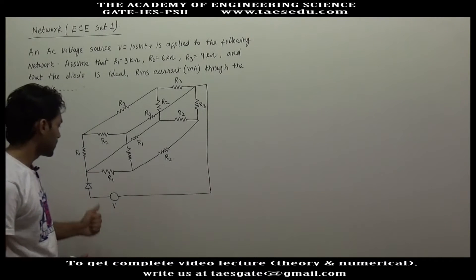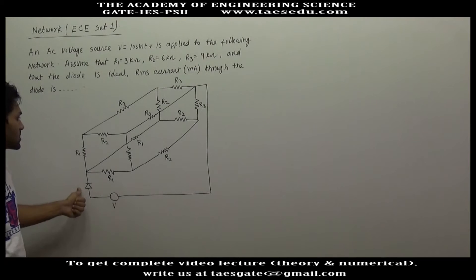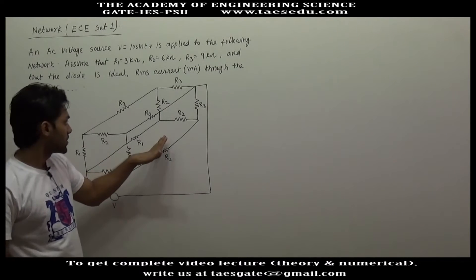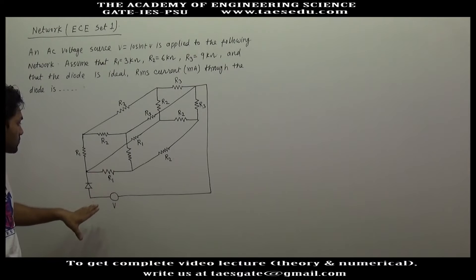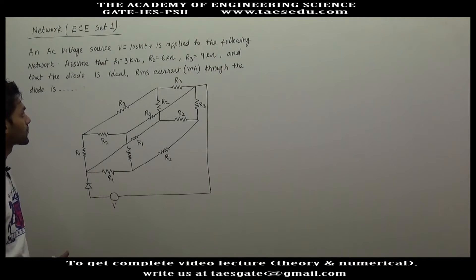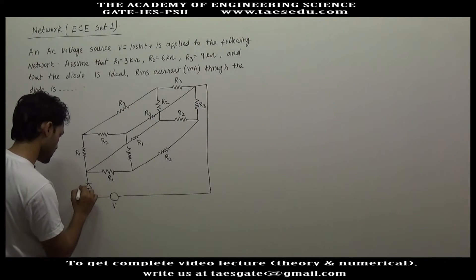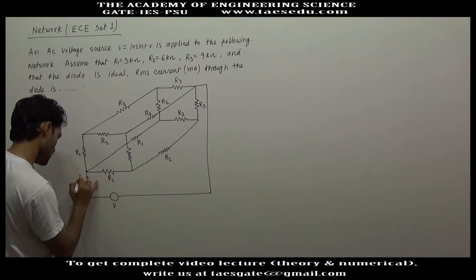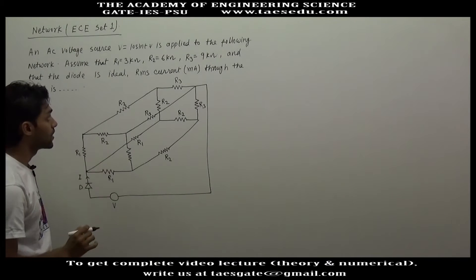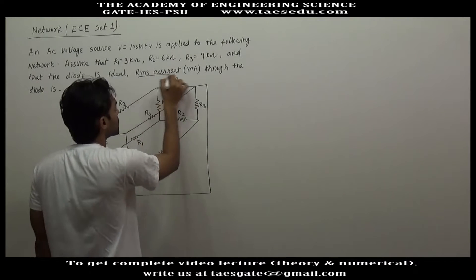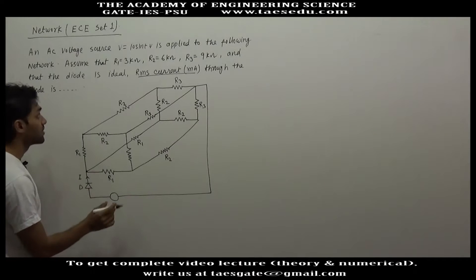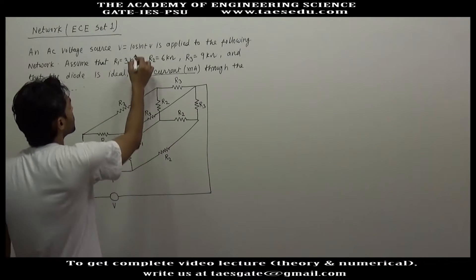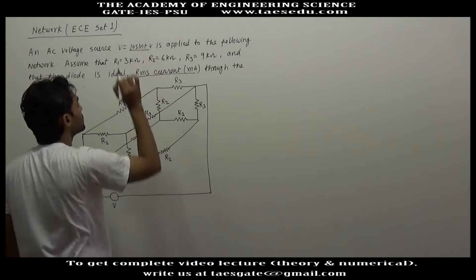A resistive network is given with a voltage source and diode. This resistive network is a symmetrical network. We have to find out the current through this ideal diode I — specifically the RMS current in milliampere through this diode if V is equal to 10 sin(t) volt.